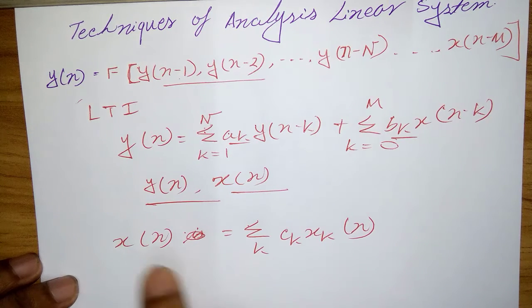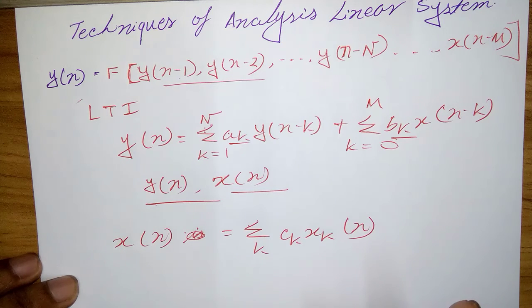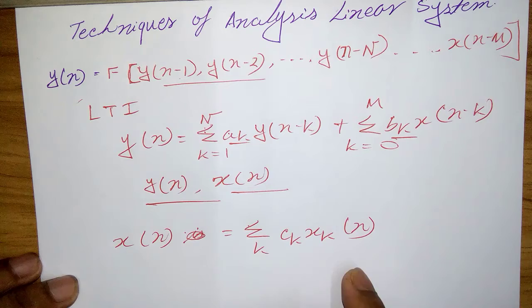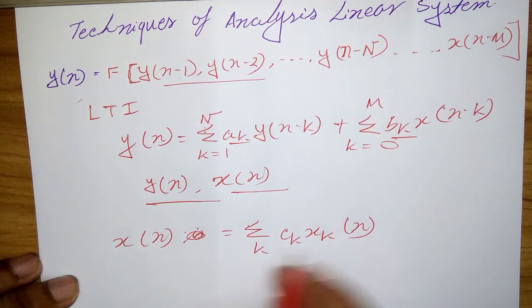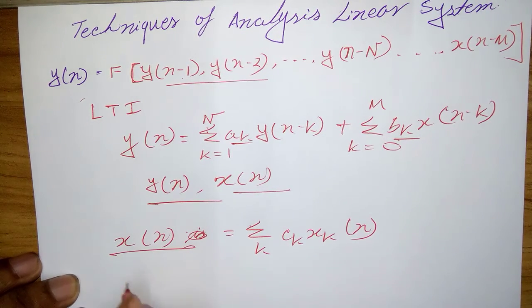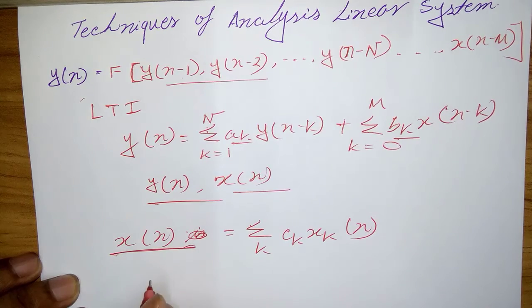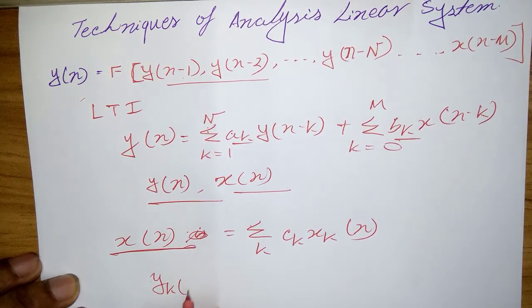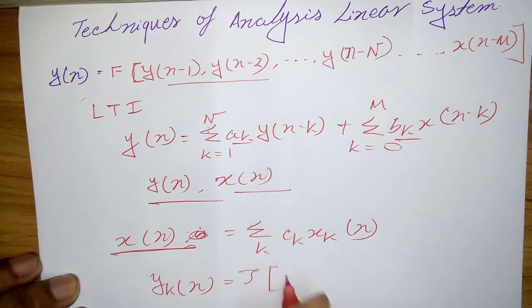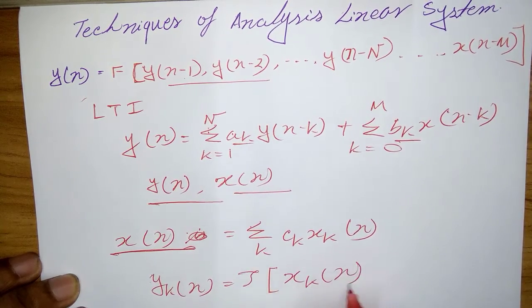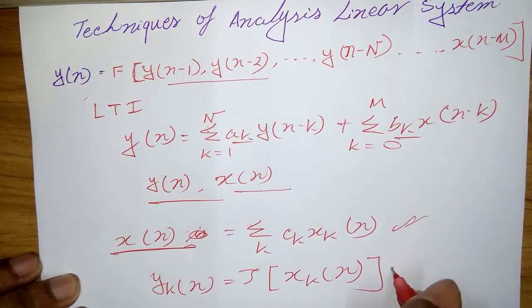Now suppose that the response of the system to the elementary signal component x_k(n) is y_k(n). Thus x_k(n) is written as y_k(n) equals tau x_k(n) from this equation.